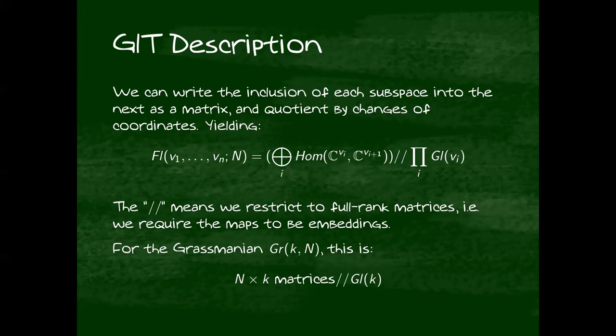Again, for the Grassmannian, there's only one matrix here because there's one subspace. It's N by k matrices, and the group is GL(k). So if you haven't seen this before, just think about that.